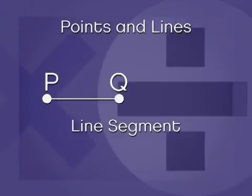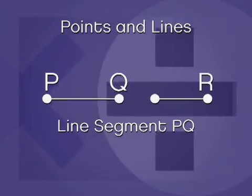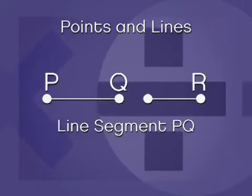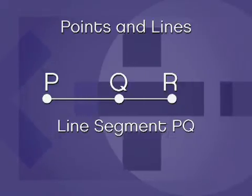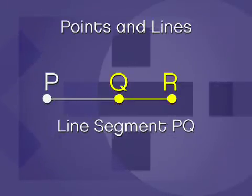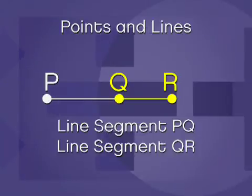Okay, we can name this line segment PQ. Here's another line segment, which we can connect to line segment PQ. See how the two line segments are joined at point Q? This new line segment can be named line segment QR.